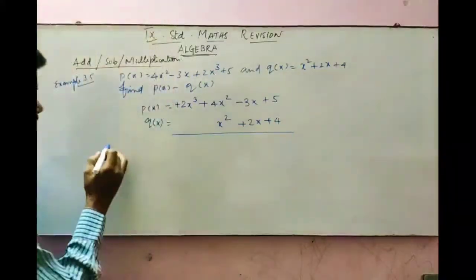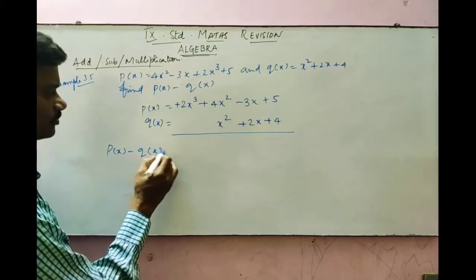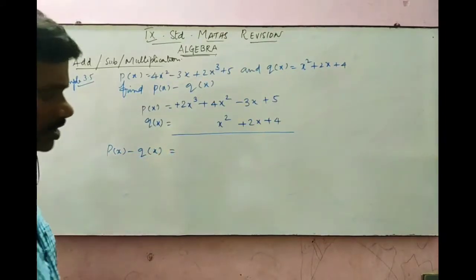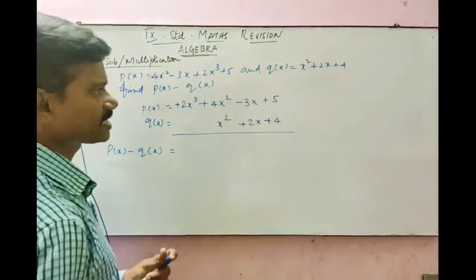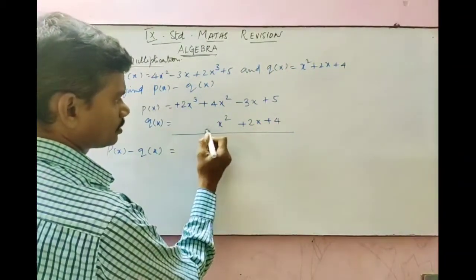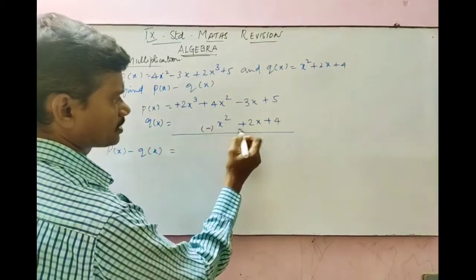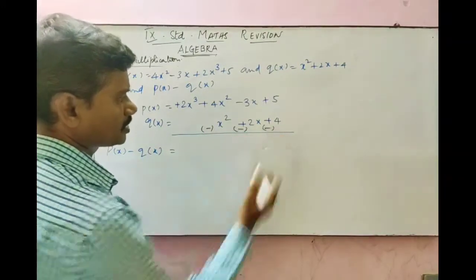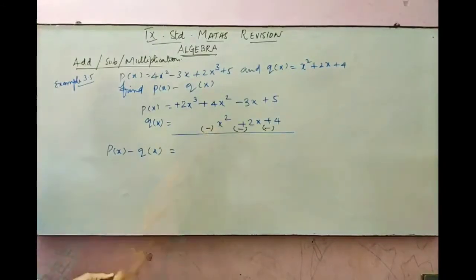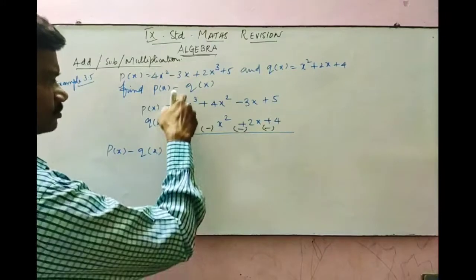Now we are going to subtract the two polynomials. Before subtracting, you have to change the sign of the second polynomial. Since each term is positive, you change them to minus. Here also minus, here also minus. Now we use these changed signs for each term. For the cubic term, we don't have any matching term in Q of x.